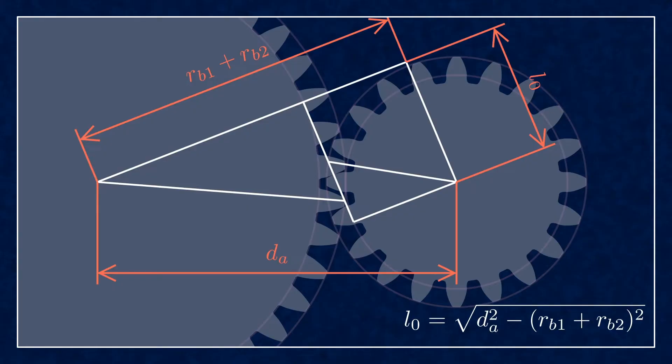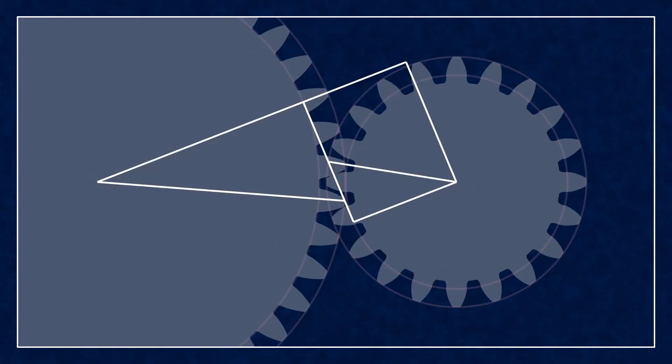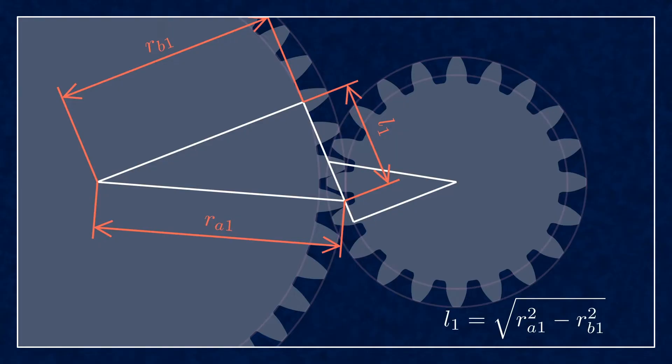Next, you can calculate this L1 length, also using Pythagoras as shown. You can do the same thing on the smaller gear for L2.